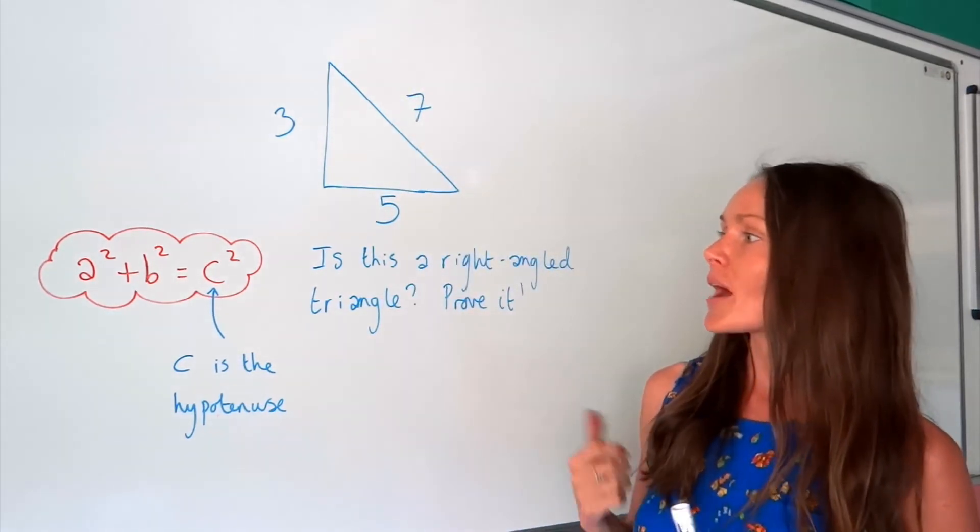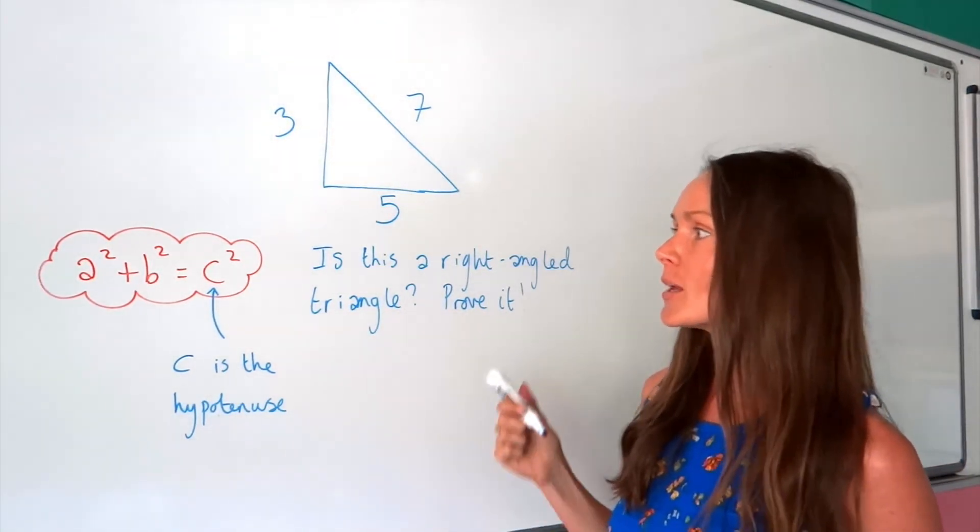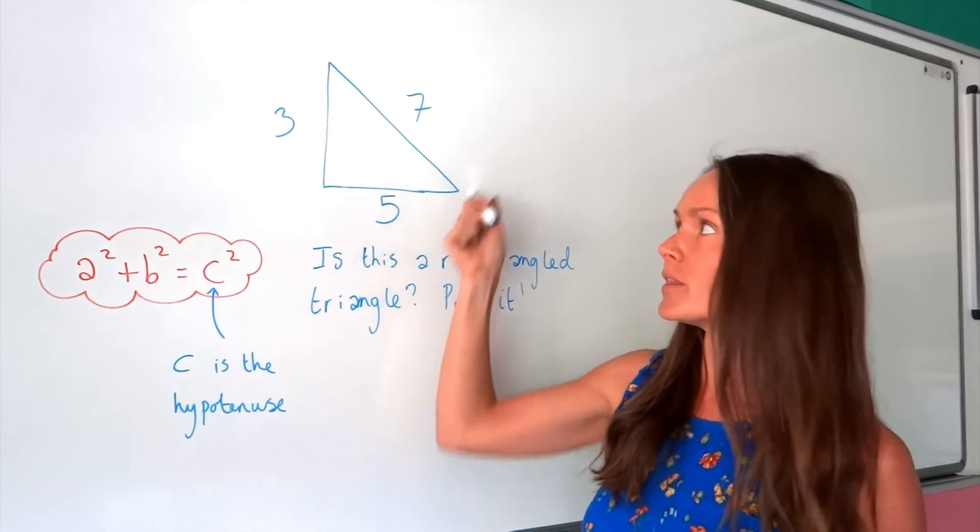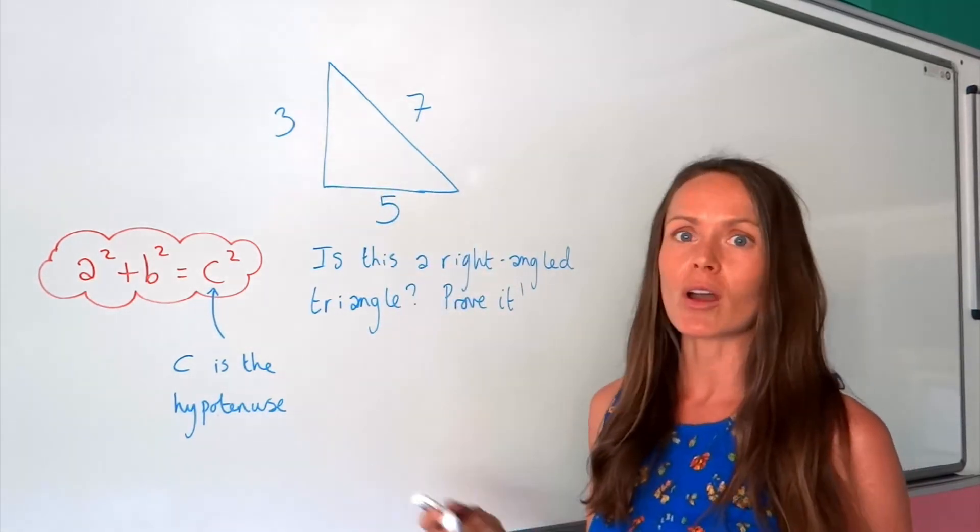So remember, Pythagoras' theorem only works with right-angled triangles. So if Pythagoras' theorem works with these numbers, we know it's a right-angled triangle. And if it doesn't work, then it can't be.